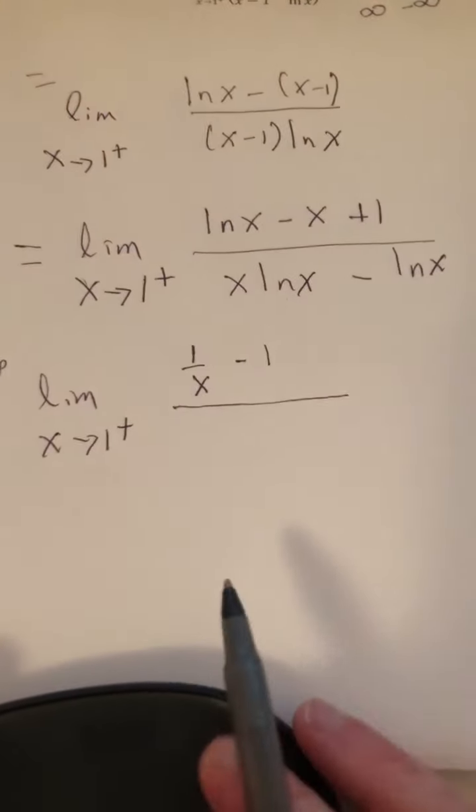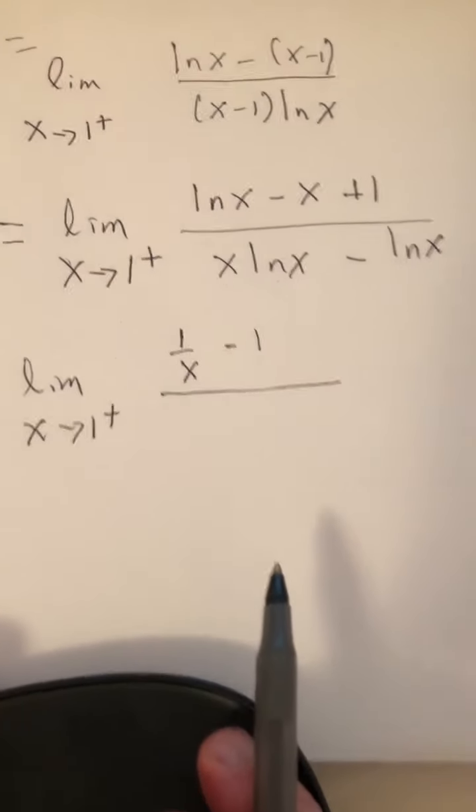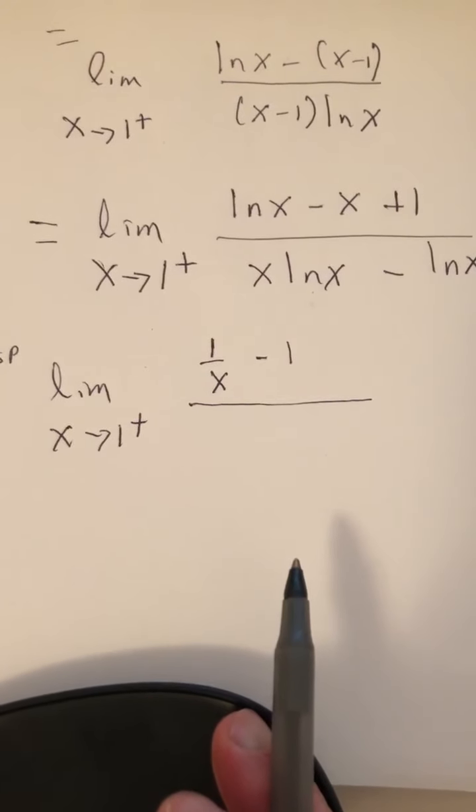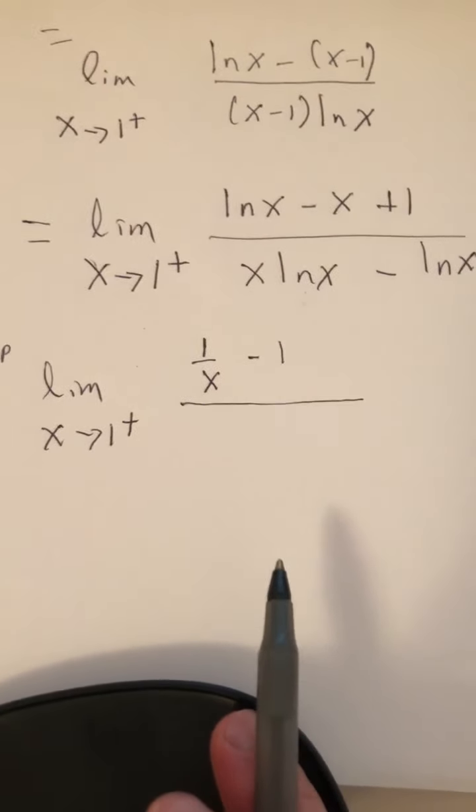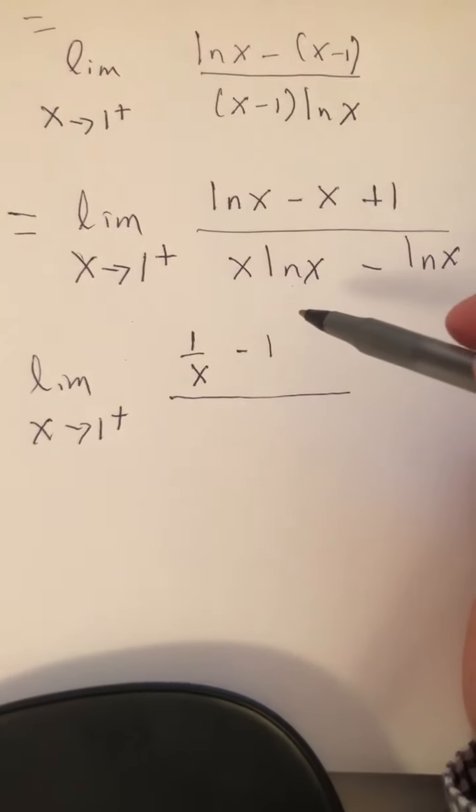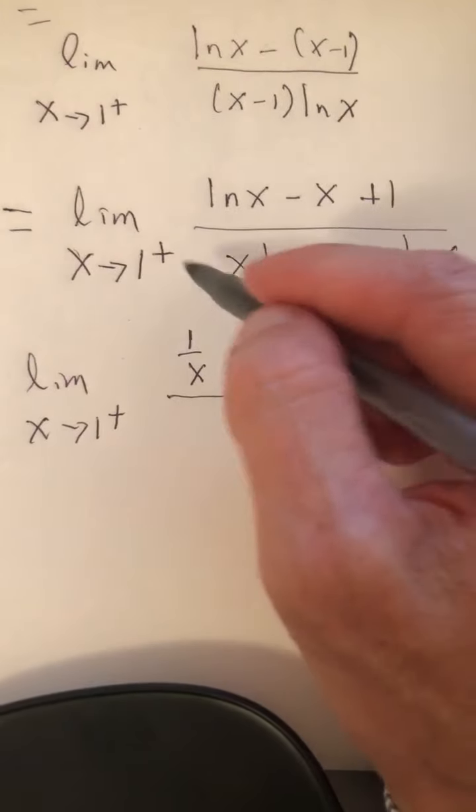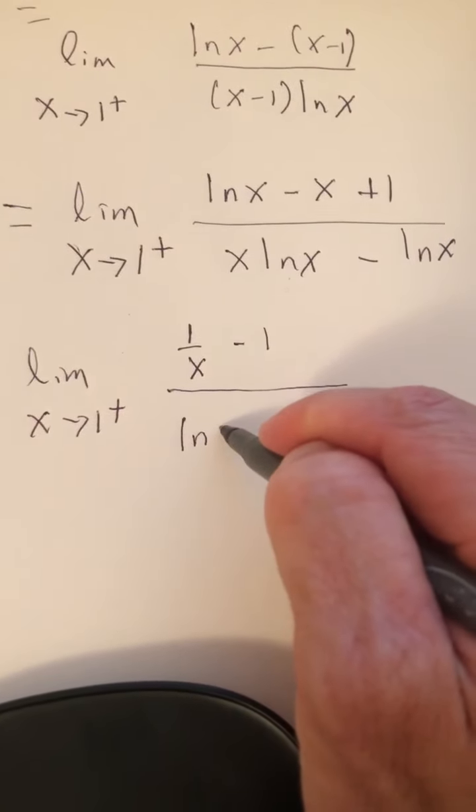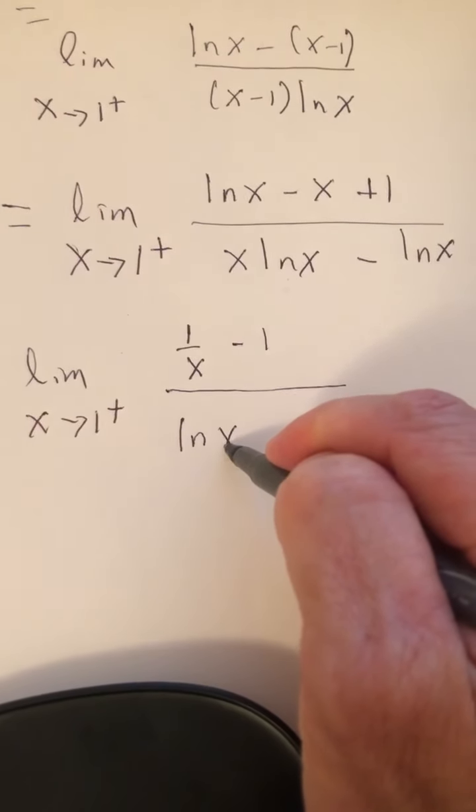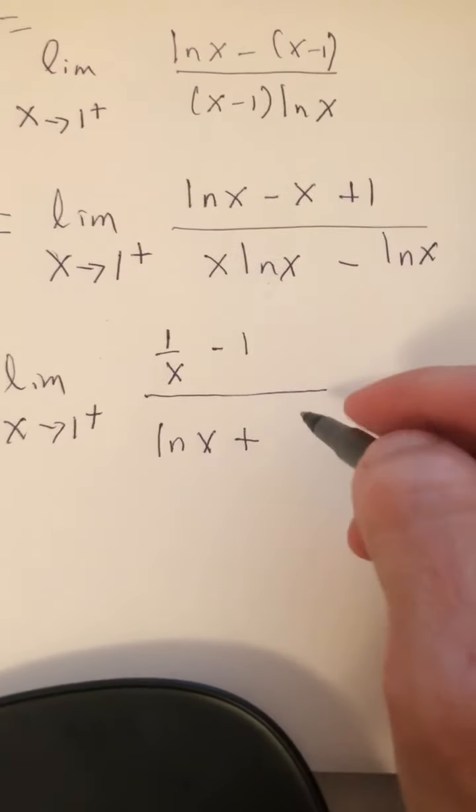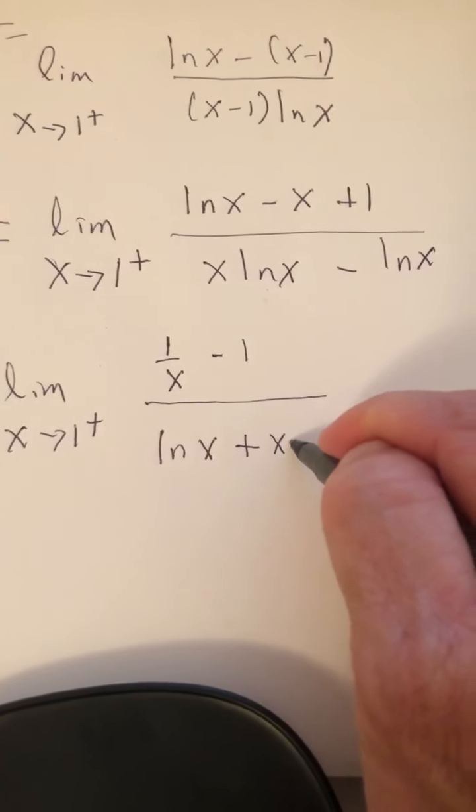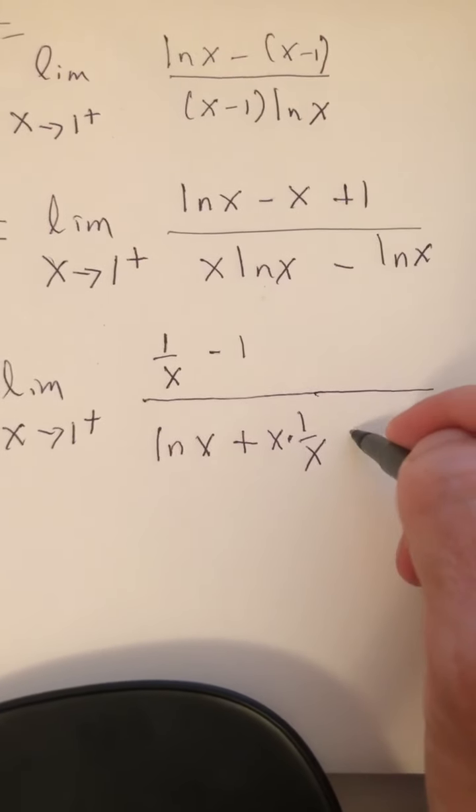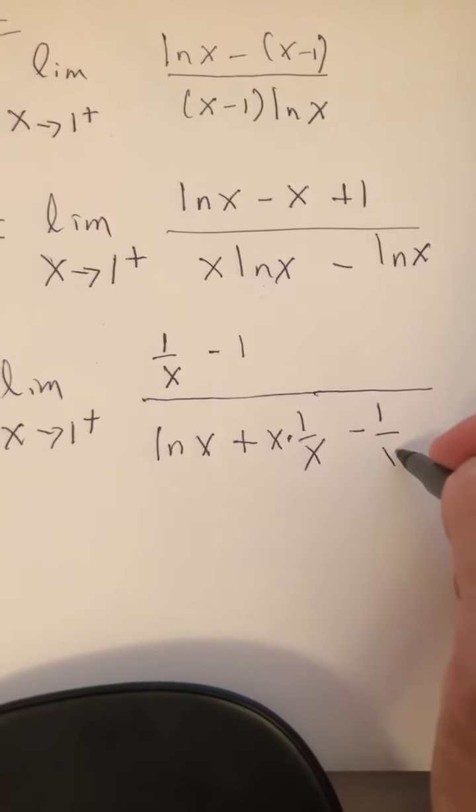Now we're going to have to use the product rule. So the derivative of x times L'n of x is going to be L'n of x plus x times 1 over x. L'n of x minus 1 over x.